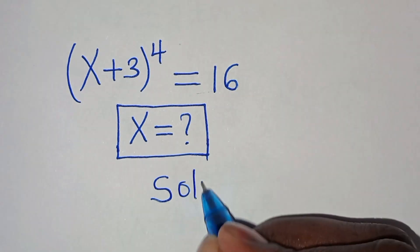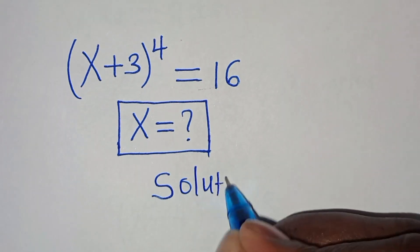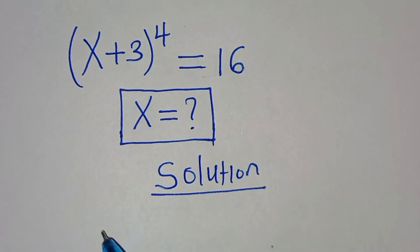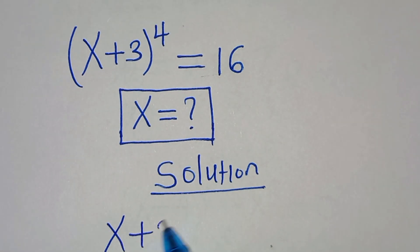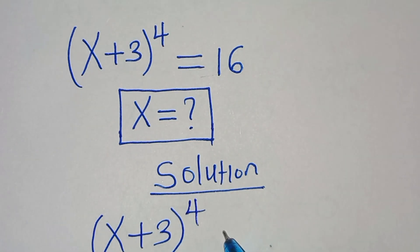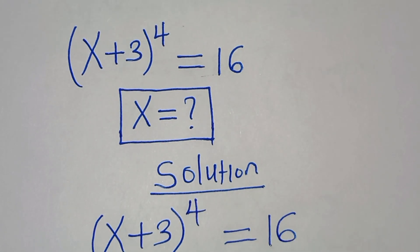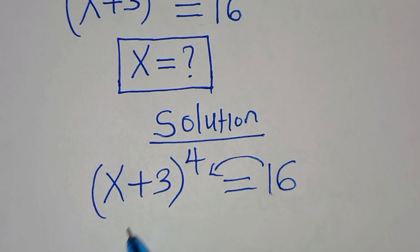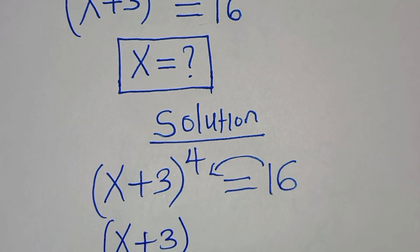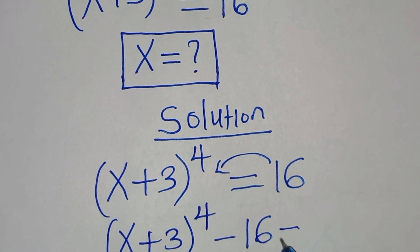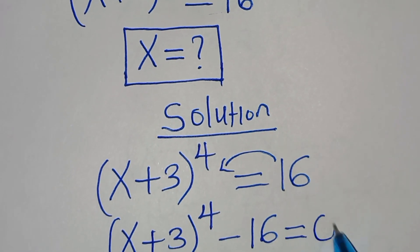Now let's provide a solution from here. We have x plus 3 raised to the power of 4, this is equal to 16. Let's take 16 on the left hand side so that we have x plus 3 raised to the power of 4, subtract 16, this is equal to 0.